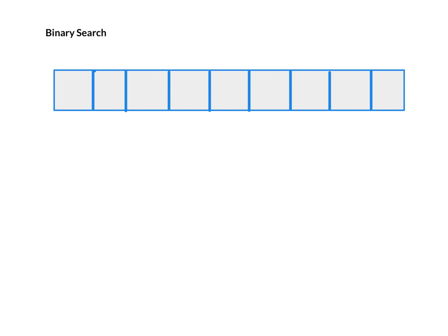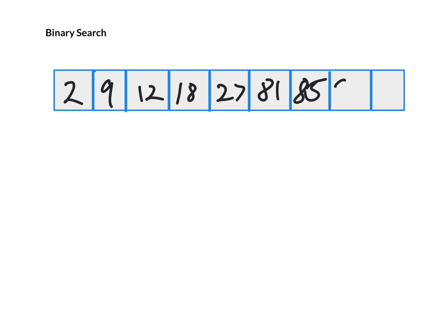We are going to look at a binary search. First of all, what we'll do is just place in some values here: 2, 9, 12, 18, 27, 81, 85, 99, and 100.